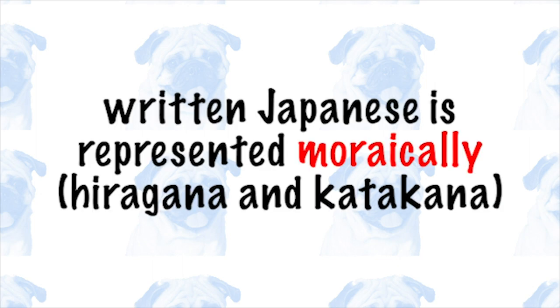Secondly, the written forms of the Japanese language are also represented moraically, meaning that each character of hiragana and katakana that we use stands for a mora rather than a syllable. So if you haven't mastered the moraic system, you haven't truly grasped the essence of hiragana and katakana.